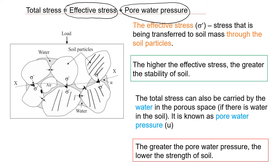Effective stress is a very important characteristic of soil mass, and we want high effective stress because it is typically correlated with greater stability of soil. If the soil is saturated or partially saturated, water is present in the pore spaces, and the applied load will also be carried by the water. The vertical stress will be carried partly by the water.